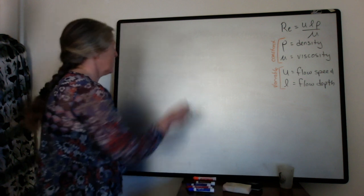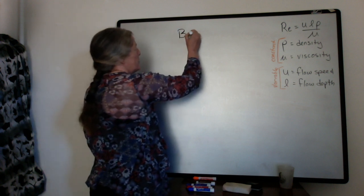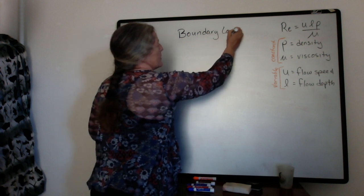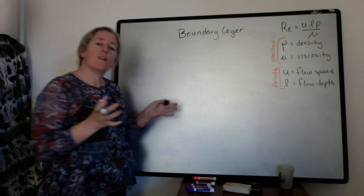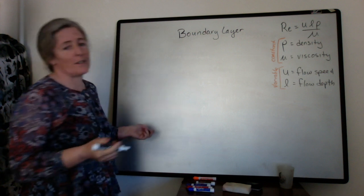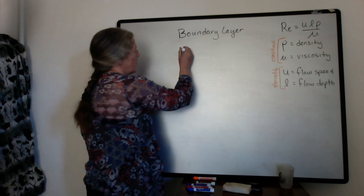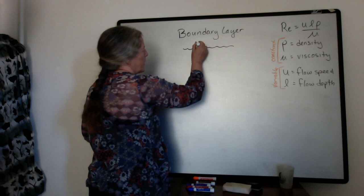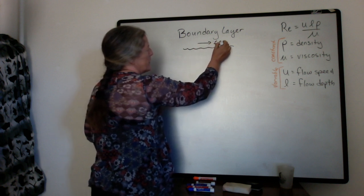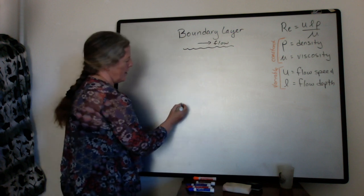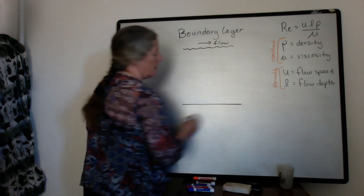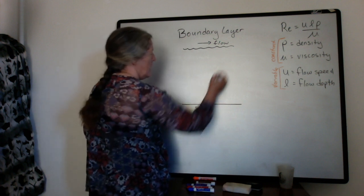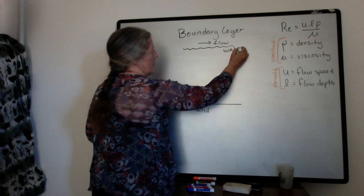What I want to talk about in this video is a boundary layer that is present at the edge of any water flow, or ice flow or air flow for that matter. If we look at a water flow, we're going to have the flow generally to the right, and then we have our solid surface down at the bottom. And this will be our water here.